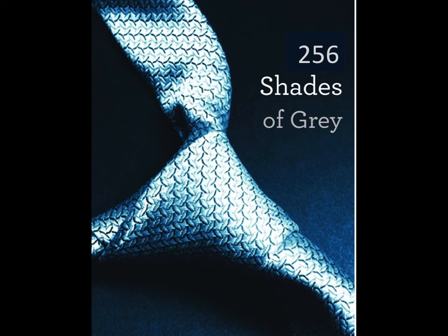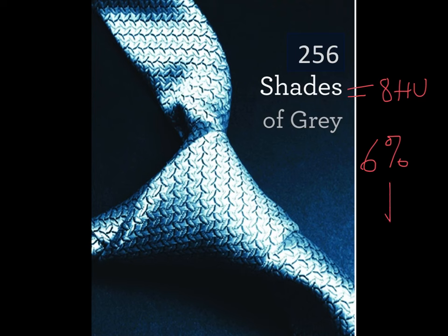A typical computer display monitor can show 256 shades of grey, which would be about 8 Hounsfield units per shade of grey. But here's the kicker — our eye can only see a 6% change in greyscale. We're just not as sensitive; we can't see all 256 shades of grey. In fact, we can only see the difference between about 17 adjacent shades of grey.